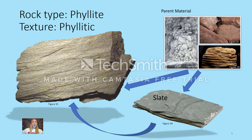The next lowest grade of foliated metamorphic rock is phyllite. Like slate, phyllite comes from shale; however, it forms at a higher temperature. Phyllite can occur when slate is further metamorphosed. It can form either directly out of the parent materials or from slate that has been further metamorphosed.